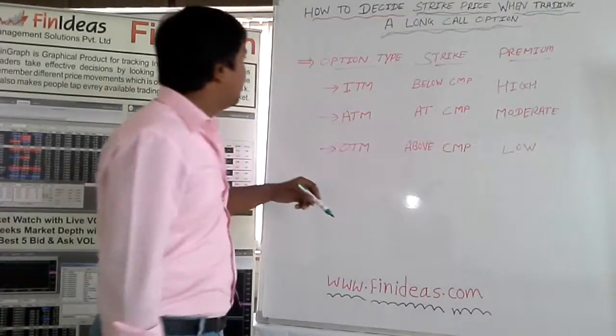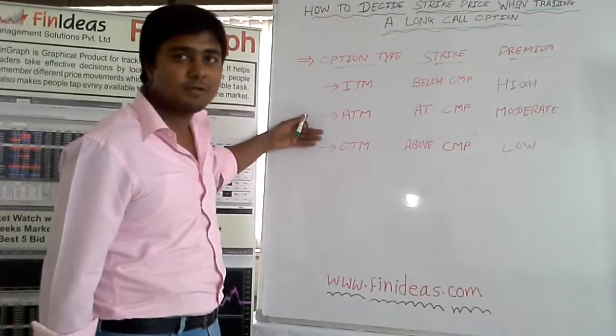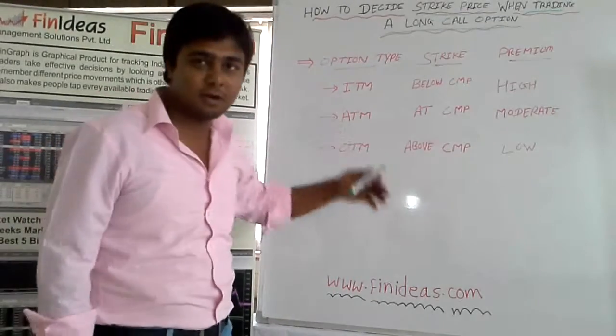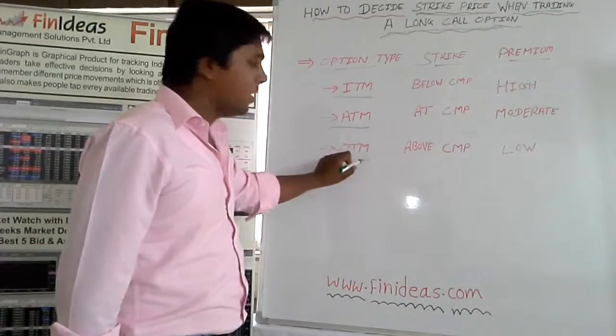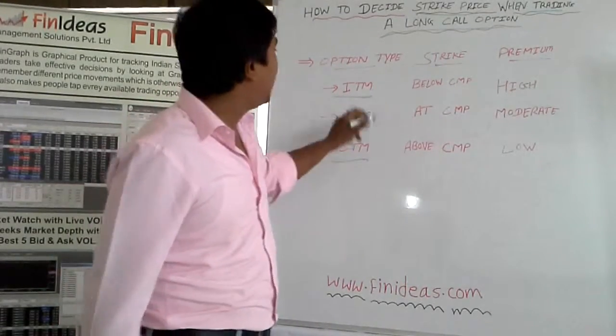Basically, there are three types of strike prices we are going to trade: first is ITM, ATM, and OTM.